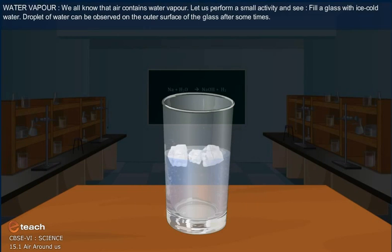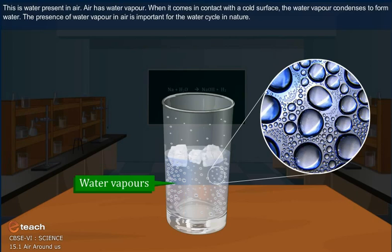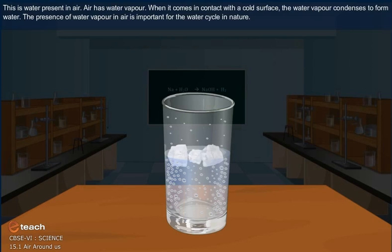Droplets of water can be observed on the outer surface of the glass after some time. This is water present in air. Air has water vapor. When it comes in contact with a cold surface, the water vapor condenses to form water.